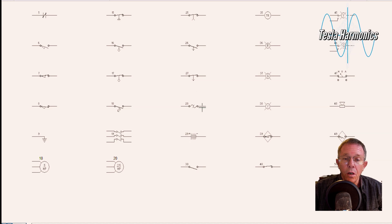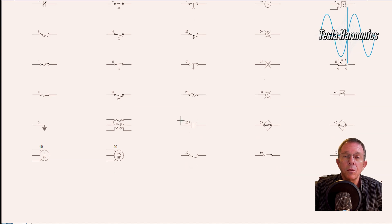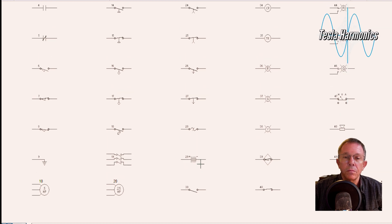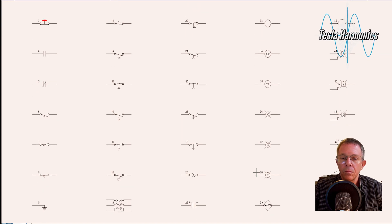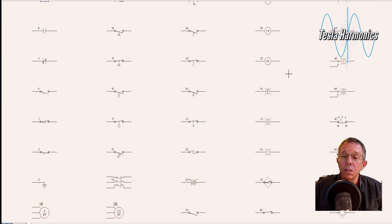Then we have a symbol for a thermal overload, a symbol for a battery, and a symbol for an open switch. Next we have a solenoid, then a symbol for a motor coil, a symbol for a generic coil, a symbol for a control relay coil, and a symbol for a timing relay coil. The next symbols are a red indicator light, a green indicator light, and a yellow indicator light.